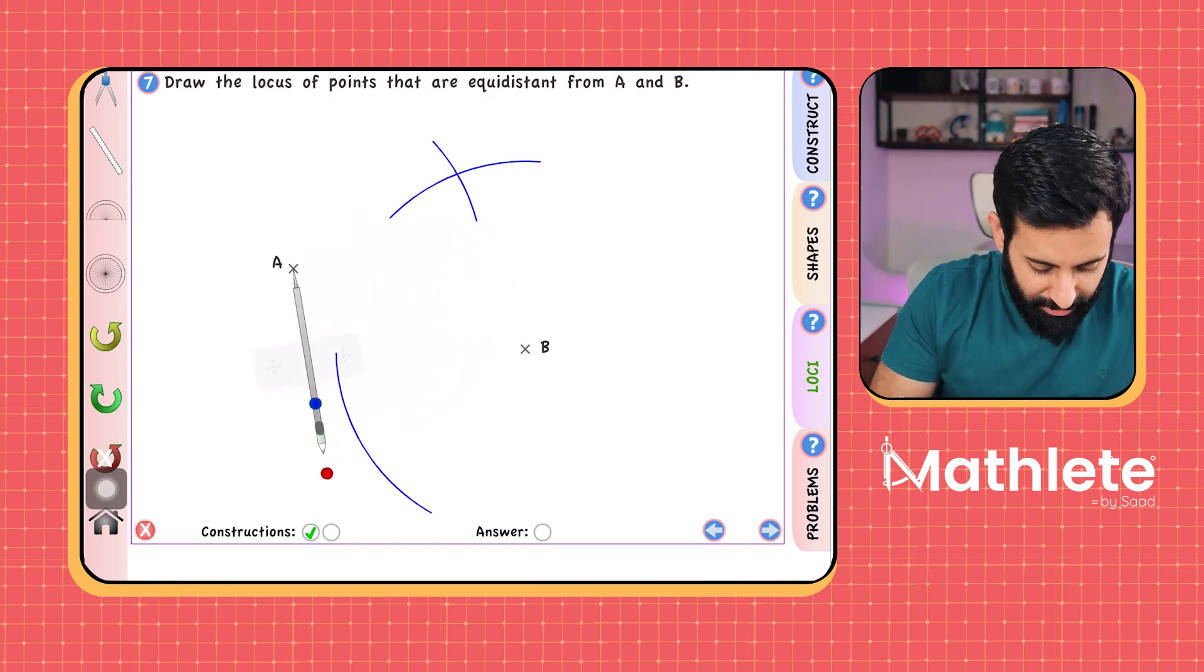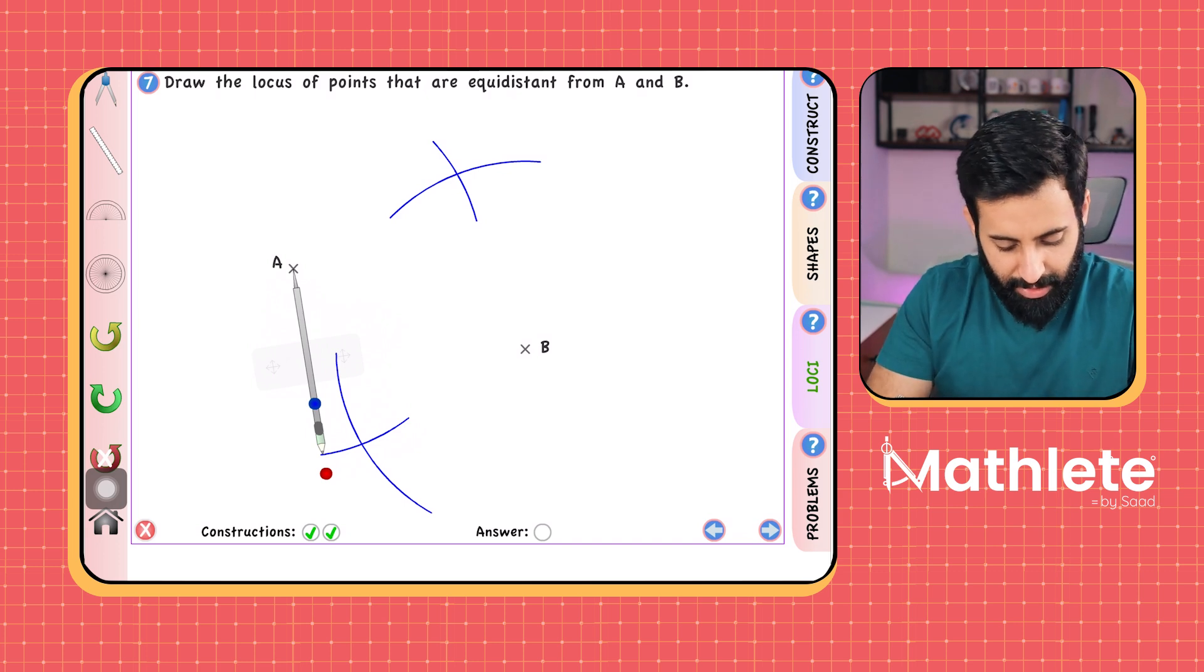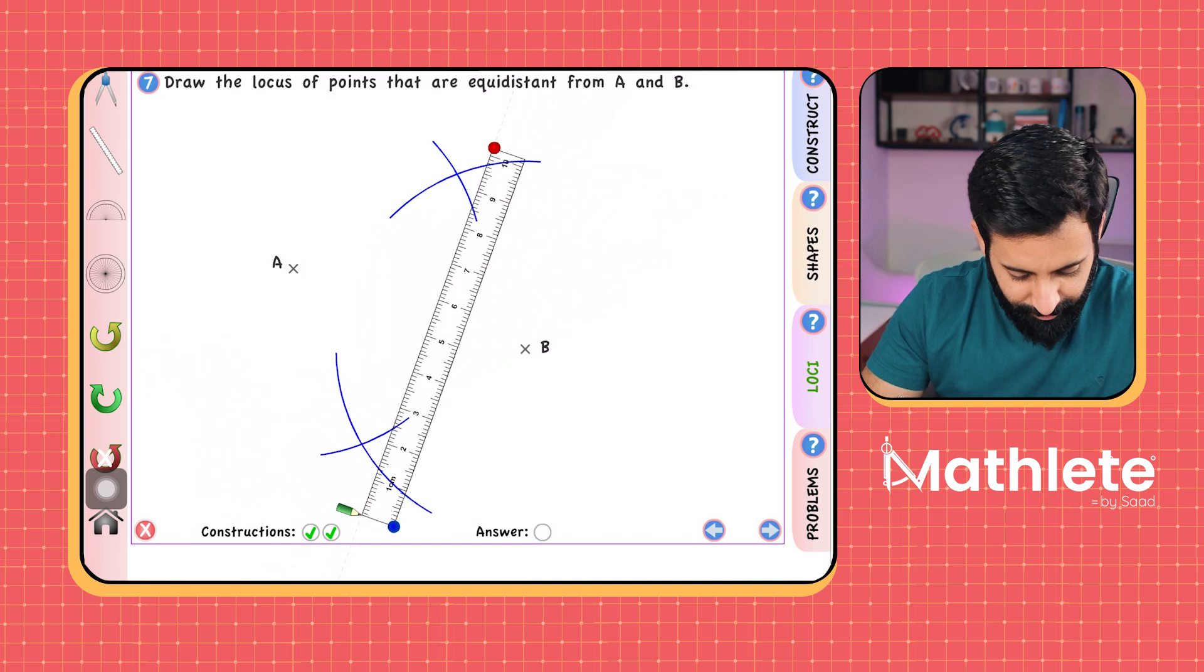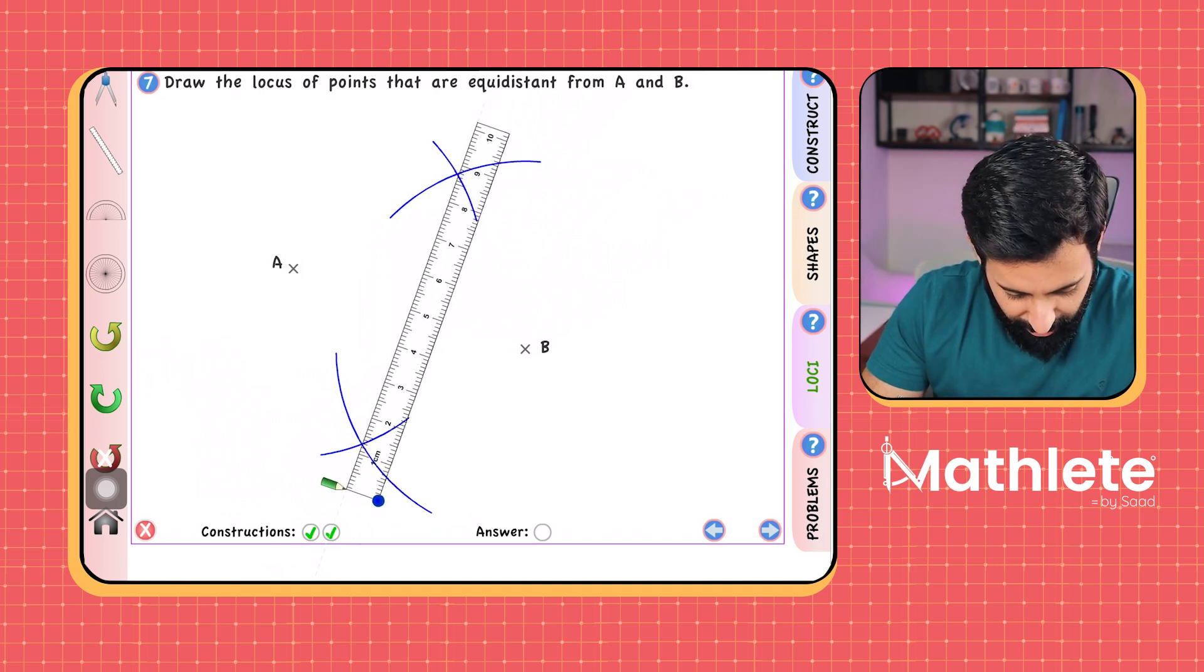And then once again, place it on the opposite side. I mean, make an arc on the opposite side. And there you go.